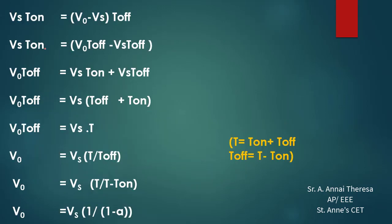Expanding the right side: Vs × t_on = V_naught × t_off − Vs × t_off. Bringing the Vs × t_off term to the left side: V_naught × t_off = Vs × t_on + Vs × t_off. Taking Vs as common: V_naught × t_off = Vs × (t_on + t_off). Since t_on + t_off = T (total time period): V_naught × t_off = Vs × T.